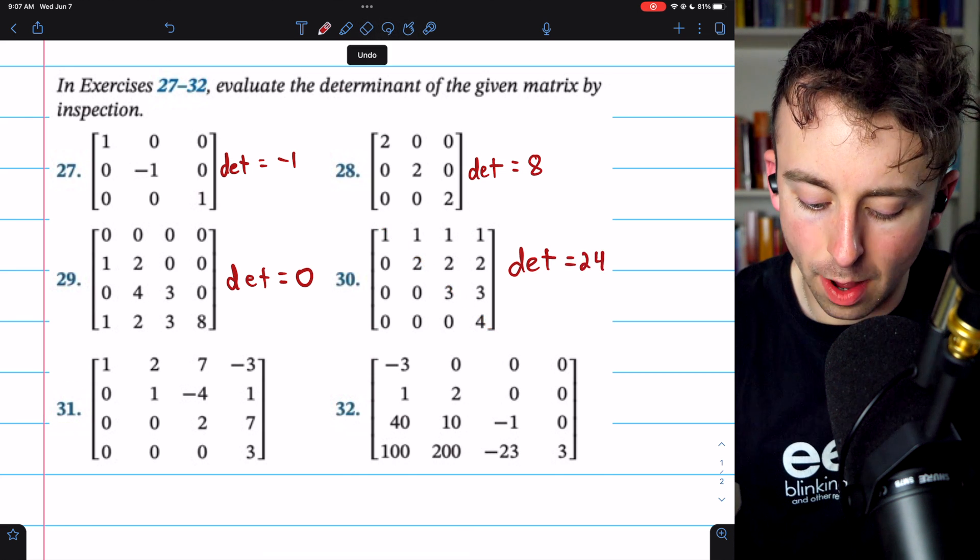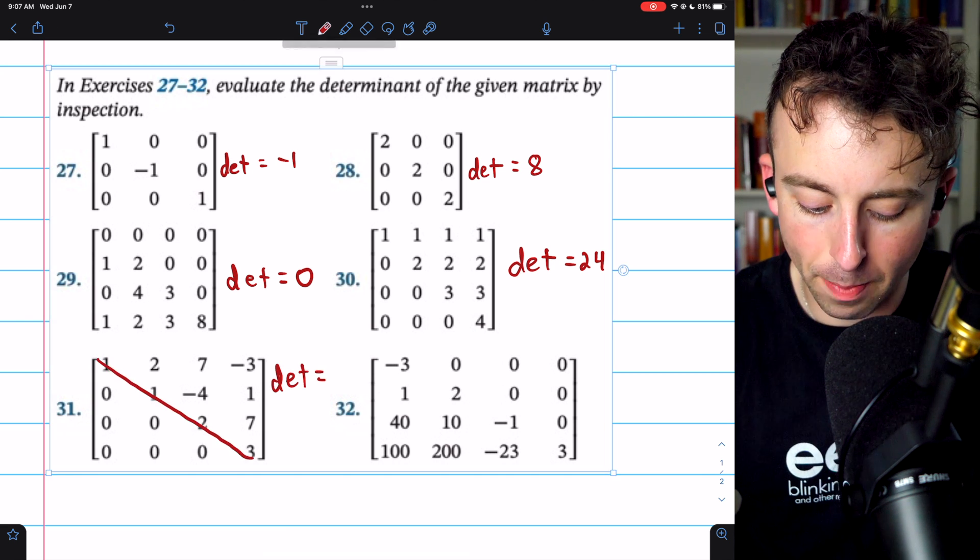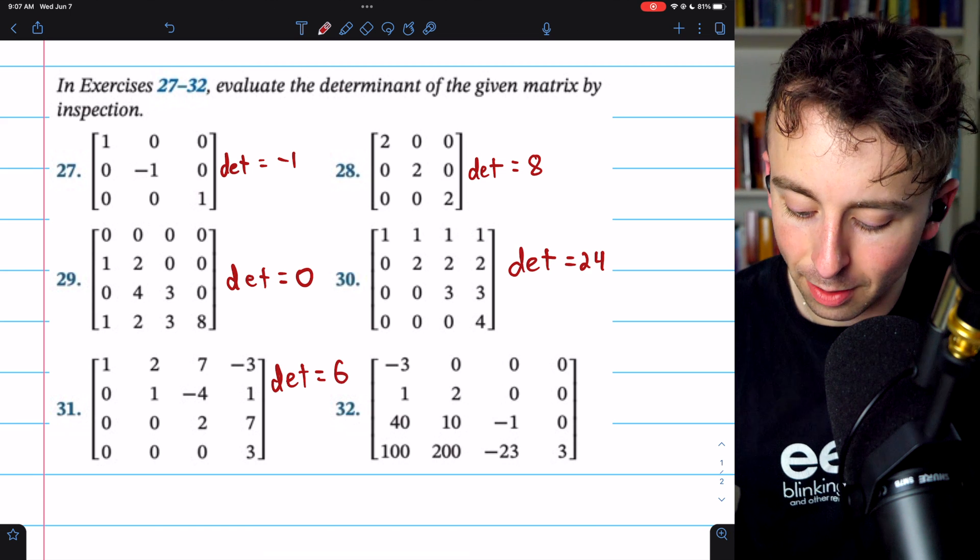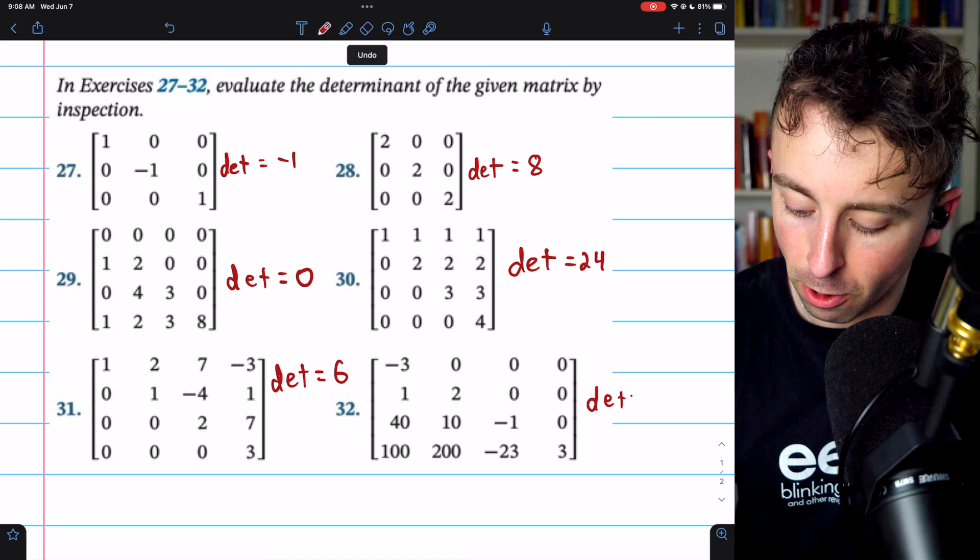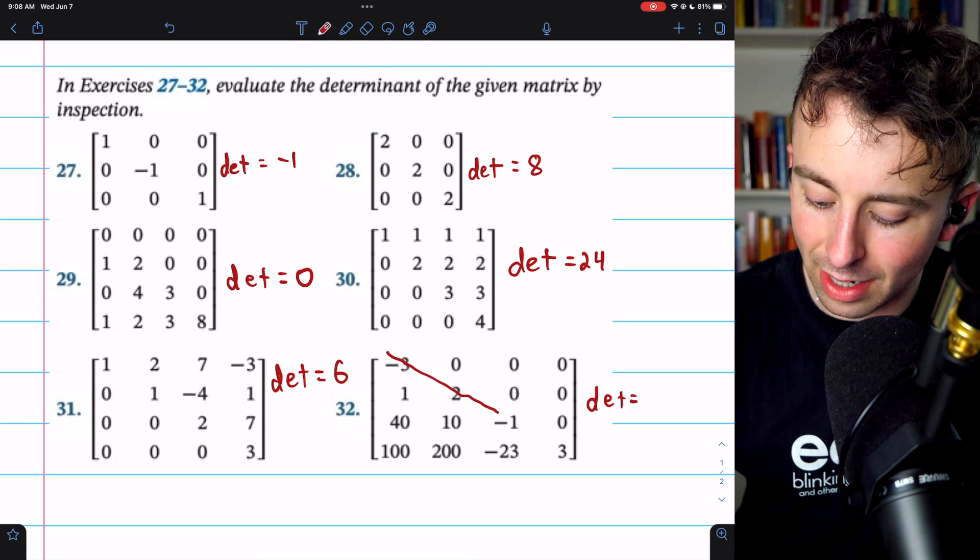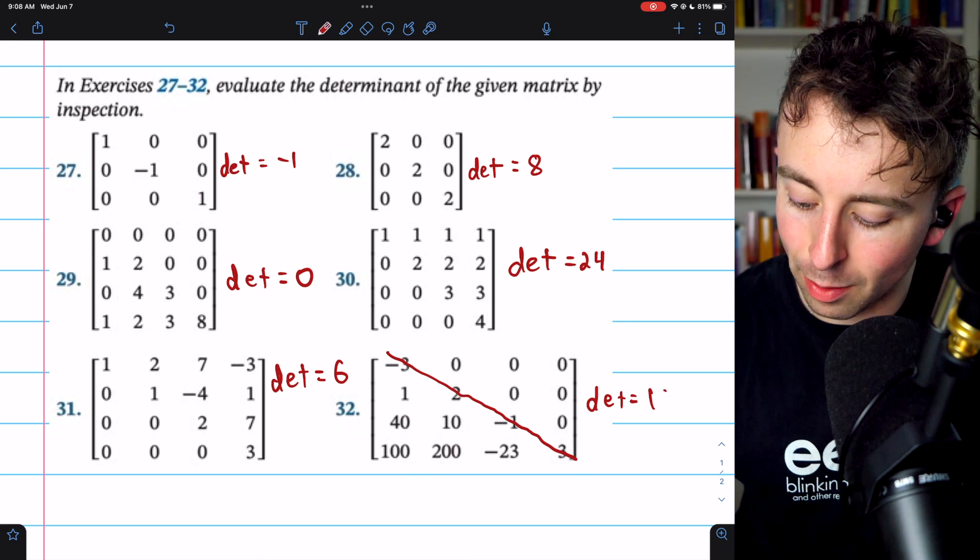Problem 31. We have an upper triangular matrix. We can calculate the determinant by multiplying across the main diagonal. That ends up just being 2 times 3, which is 6. Finally, problem 32 is a lower triangular matrix. We will multiply across the main diagonal. And what we get is negative 3 times 2 is negative 6 times negative 1 is positive 6 times 3 is positive 18.